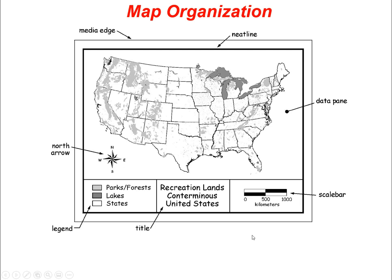Another thing that's missing on many maps is the source of the data — where did the data come from? You don't want to be caught in a situation where someone says 'that's my data' and sues you for it. So always include the source citation. Then there's the media edge, which is the edge of the paper, computer screen, etc. In total, there should be 10 items: title, your name, the date, the legend, the scale bar, the scale ratio, the map projection, the north arrow, the neat line, and the source citation.